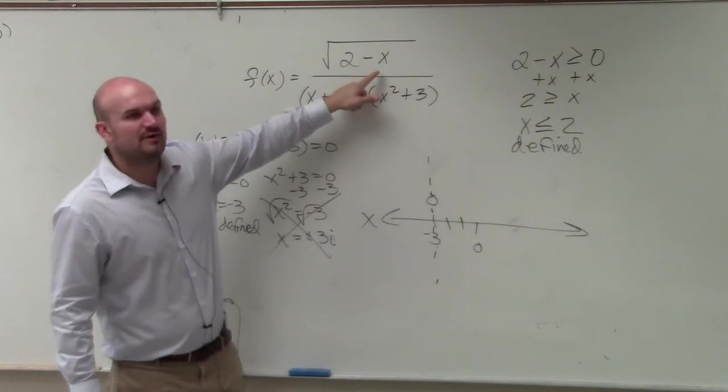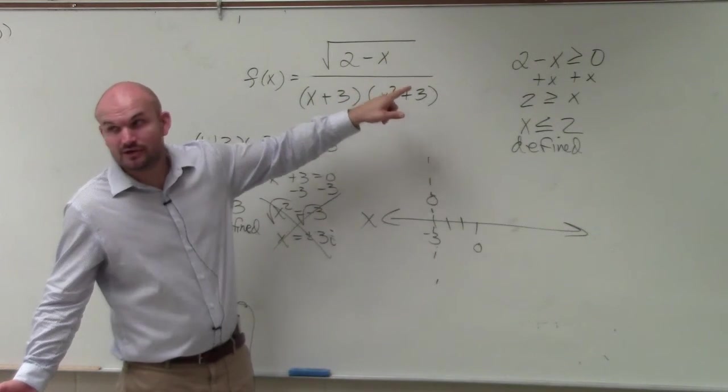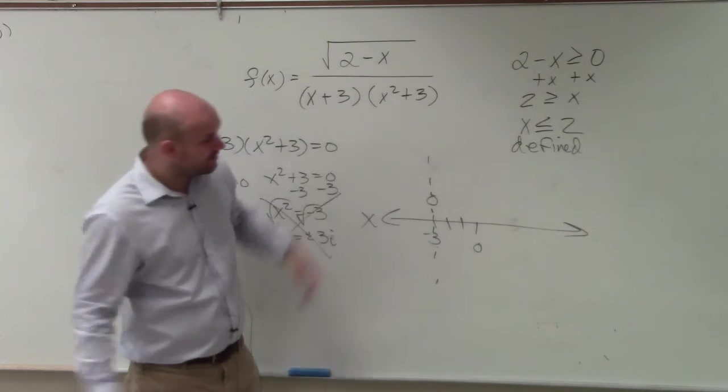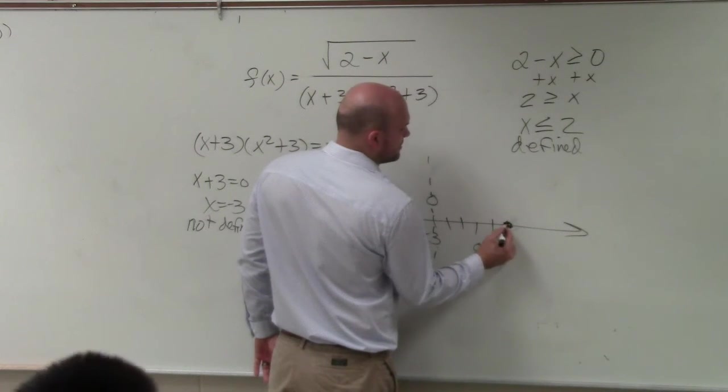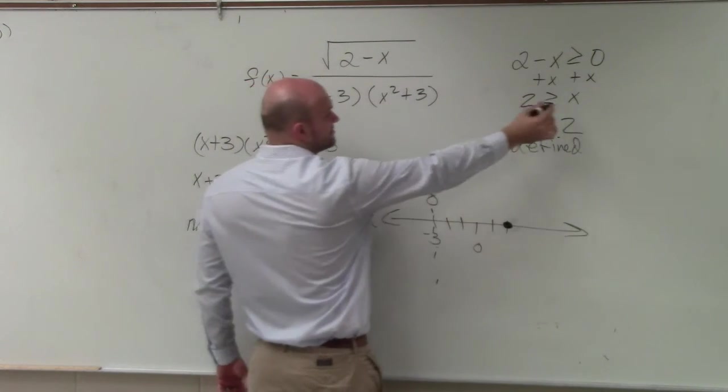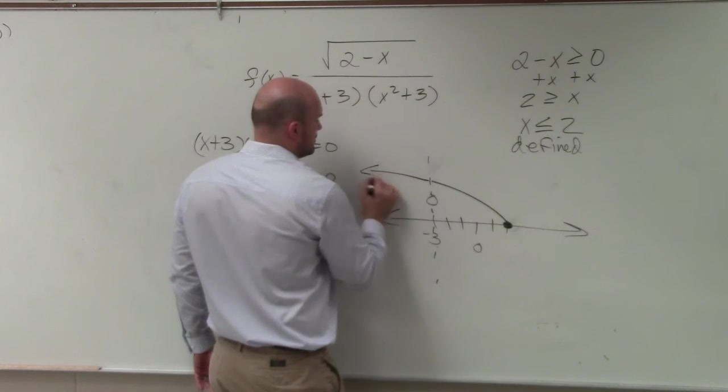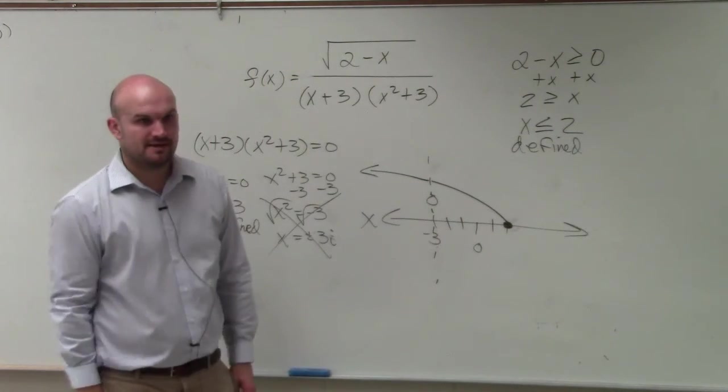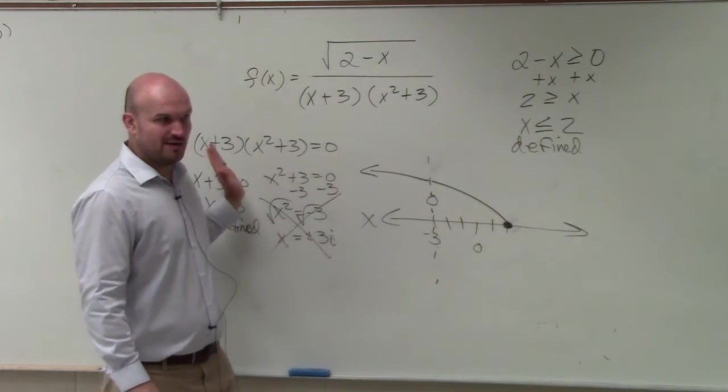What if I plugged in 3? 2 minus 3 is negative 1. Can you take square root of negative 1 for real numbers? No. So it has to be all numbers that are equal to 2, but our x is less than or equal to 2. So it looks something like that, right? So it's all values that are less than 2 that don't equal negative 3, but then continue on.